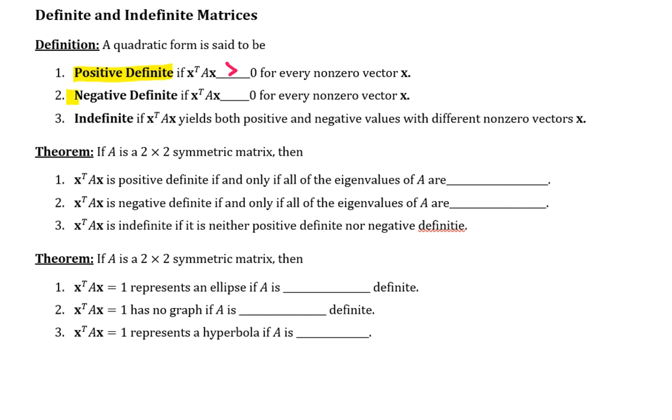A quadratic form is said to be negative definite if the product X transpose AX is less than zero for every nonzero vector X. The quadratic form is said to be indefinite if the product X transpose AX yields both positive and negative values with different nonzero vectors X.